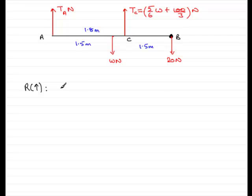Okay, so resolving upwards, we've got all of TA acting upwards, so that's positive. Let's move across to the tension in this rope at C, so we know that's positive. Its magnitude is 5/6w plus 100 over 3, so let's write that in.